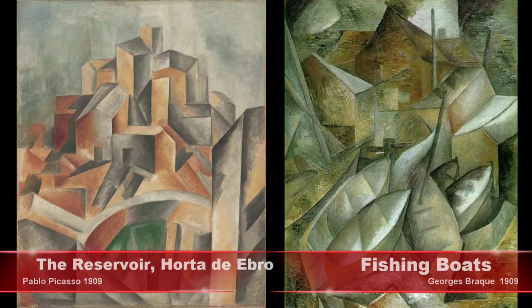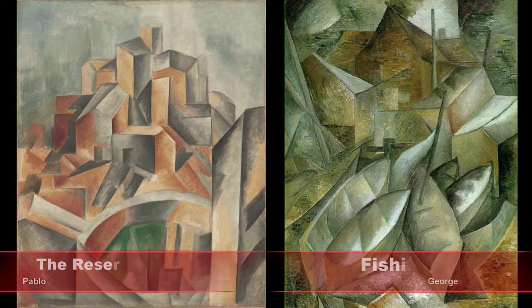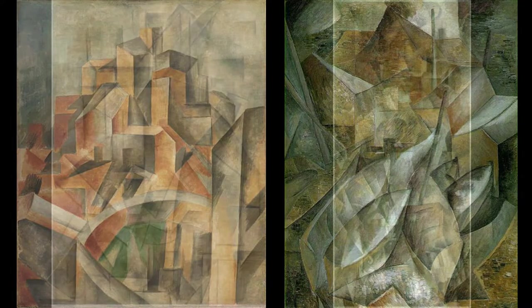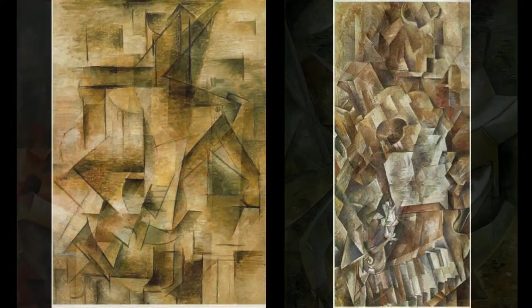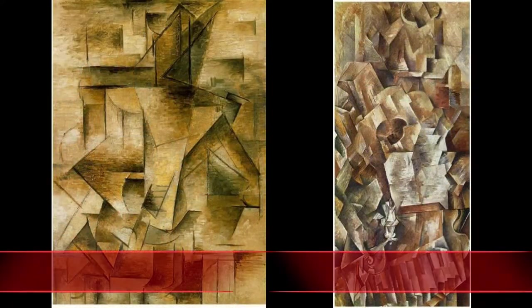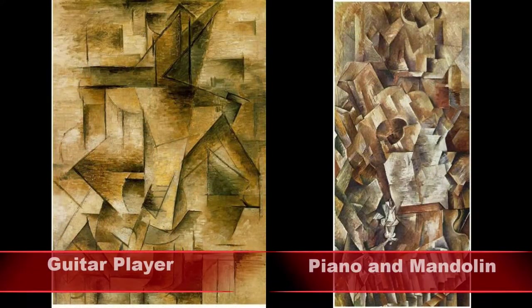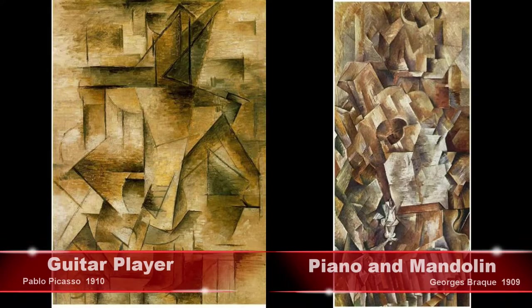Picasso wanted to try something different. He was interested in something deeper or more elemental, so he decided to simplify the images to its most basic features: triangles, squares, circles, and lines.